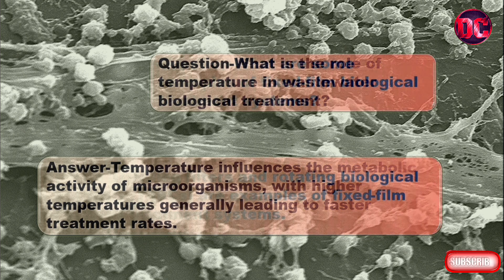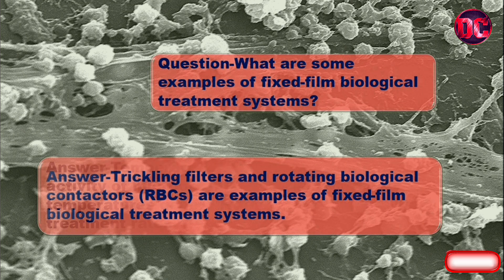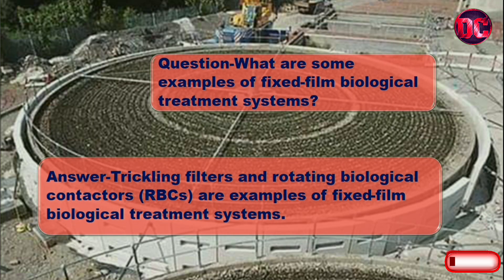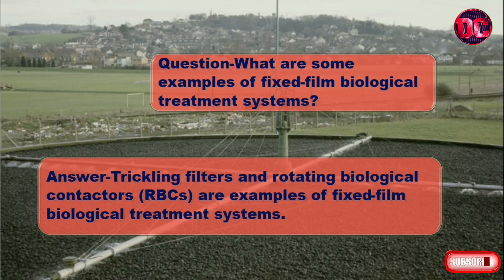Question: What are some examples of fixed film biological treatment systems? Answer: Trickling filters and rotating biological contactors (RBCs) are examples of fixed film biological treatment systems.